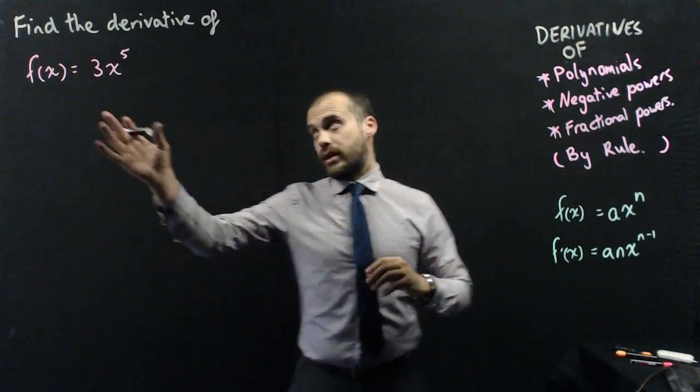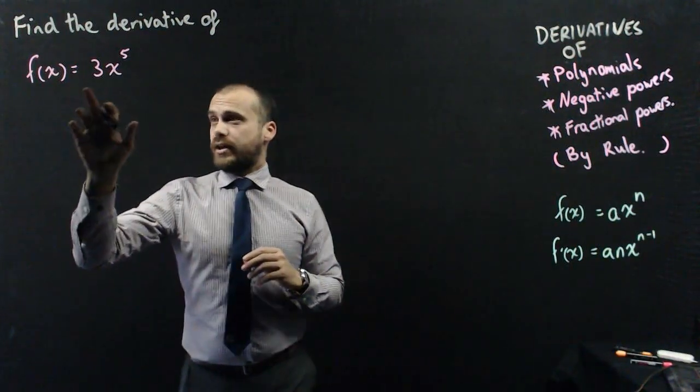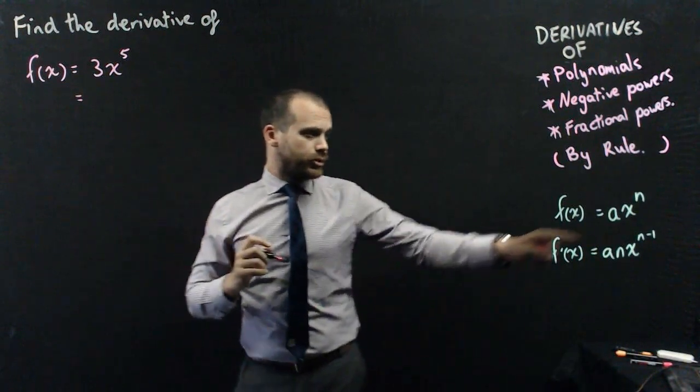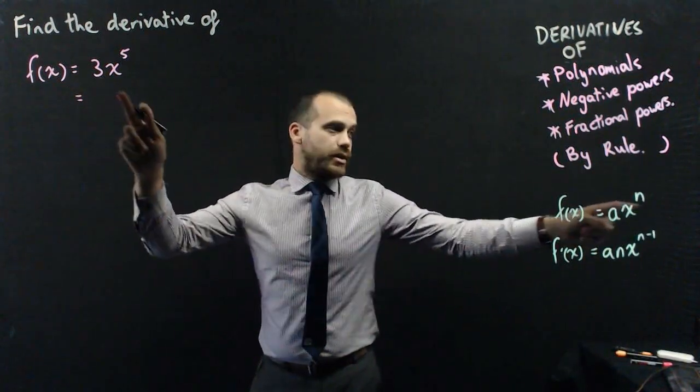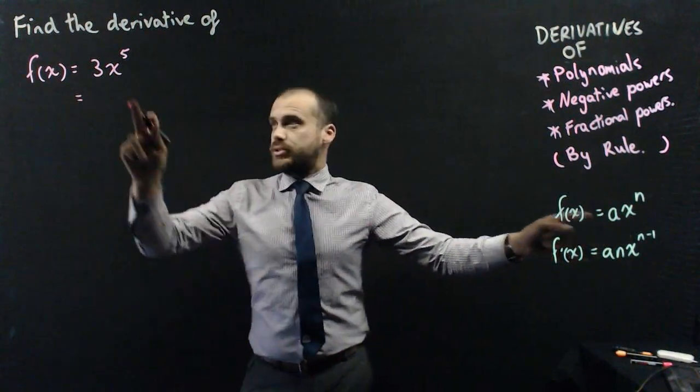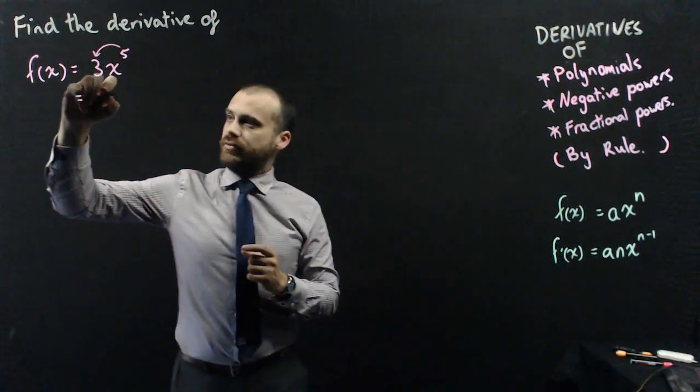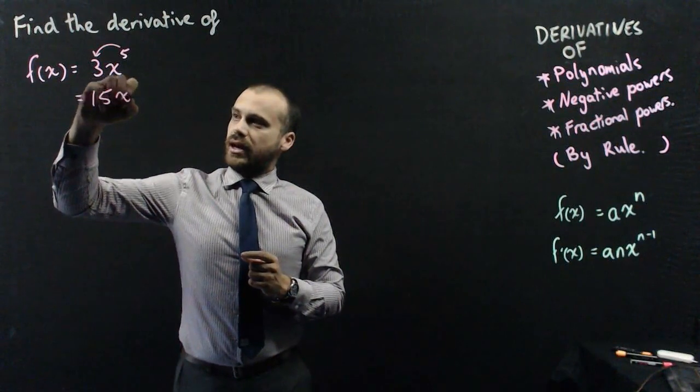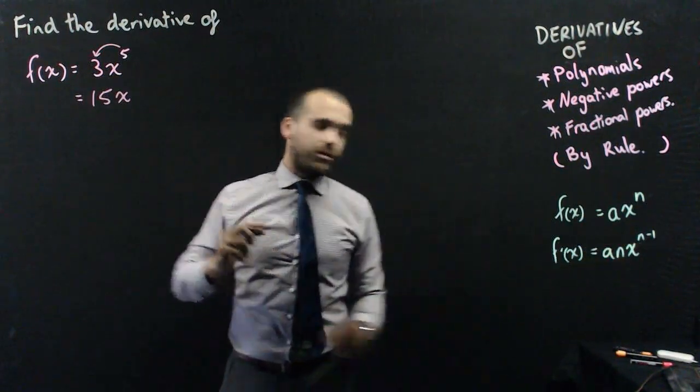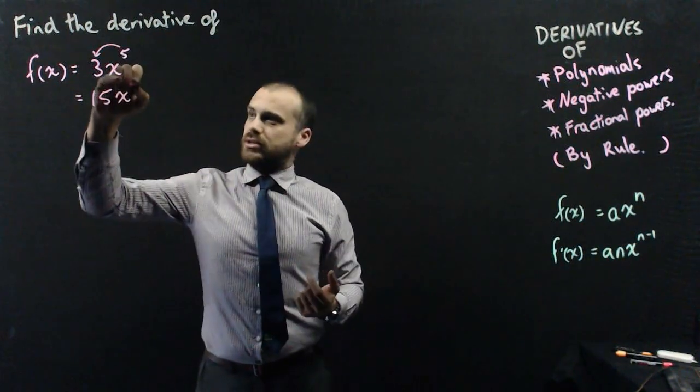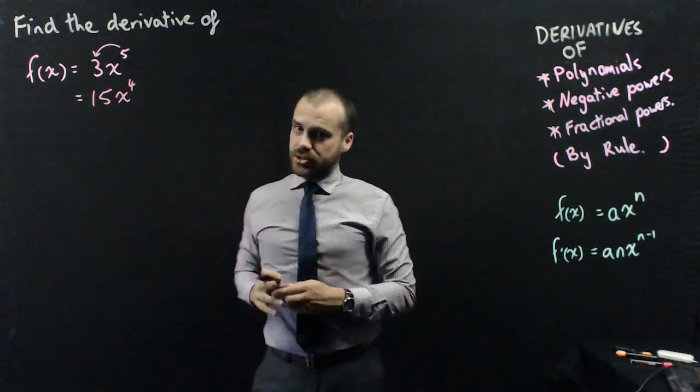The first question, find the derivative of f of x equals 3x to the 5. So using our rule, a is 3 and n is 5, so I need to take the 5 and bring it out to the front here. So 3 times 5, that's going to be 15, and then decrease the power by 1. So 5 minus 1 is going to be 4. And it should be as simple as that.